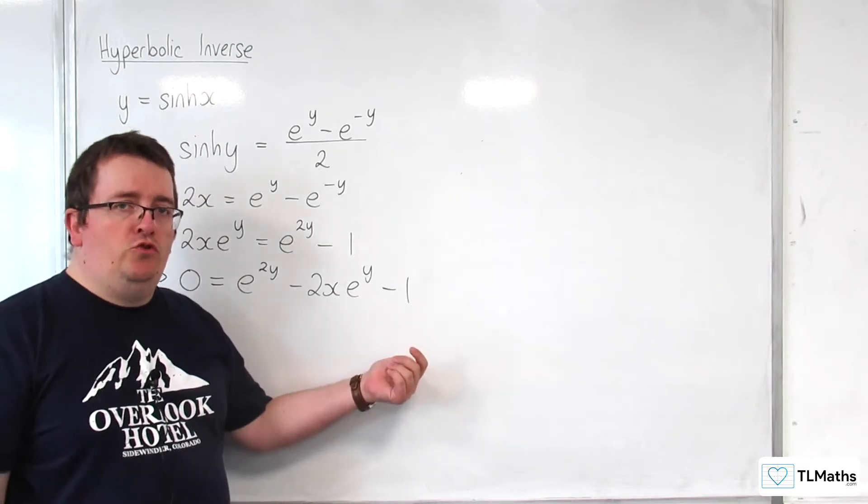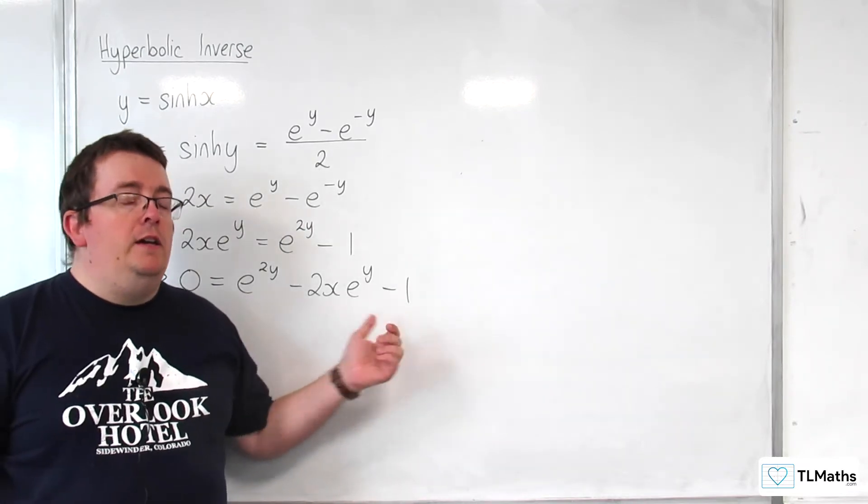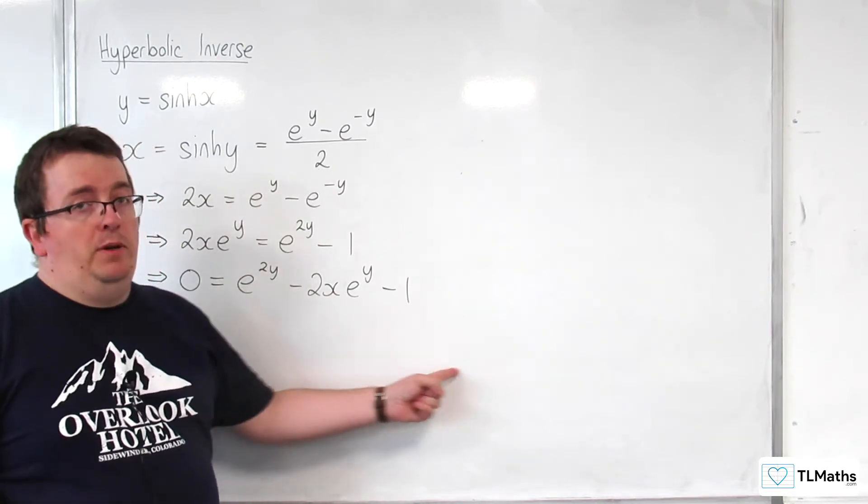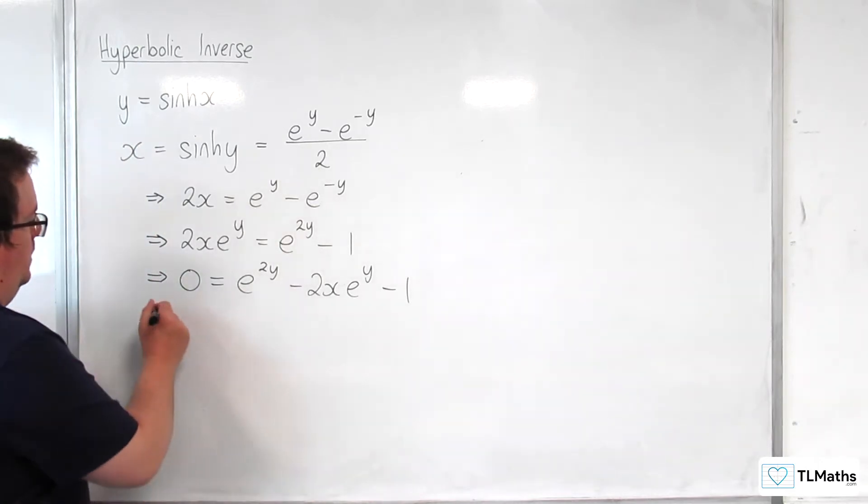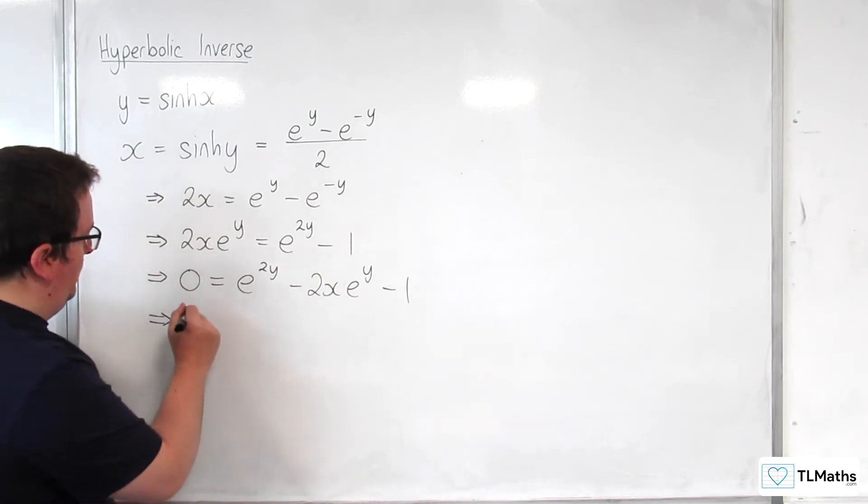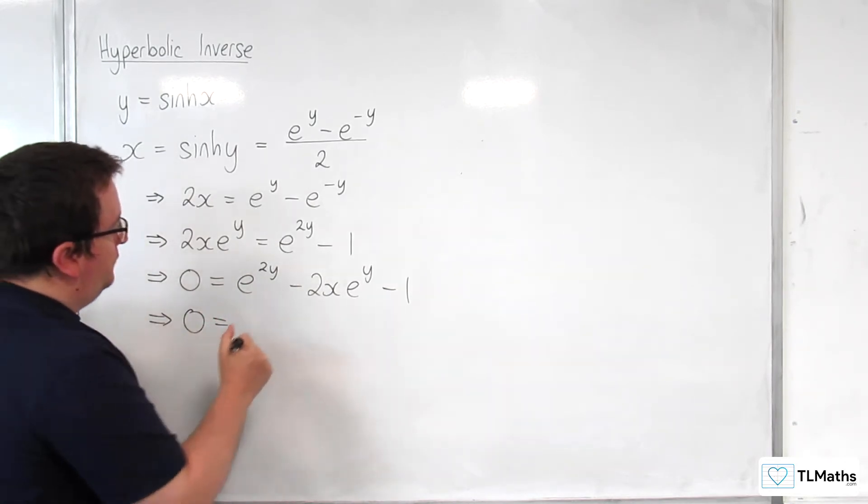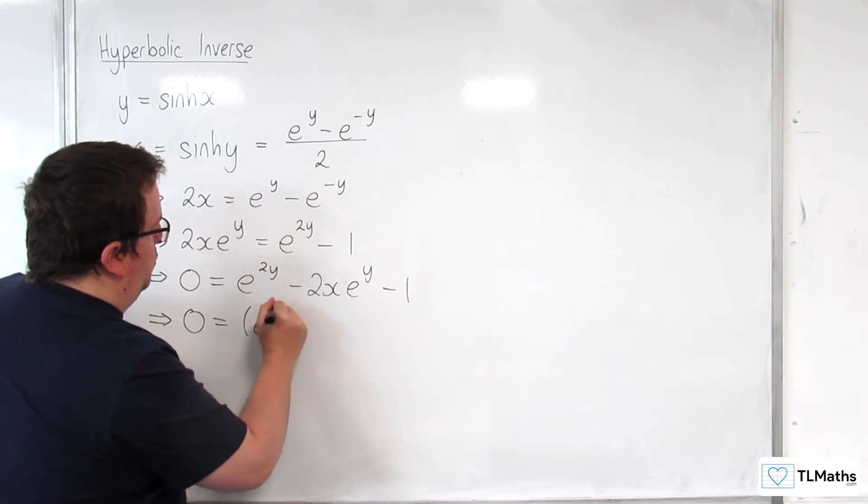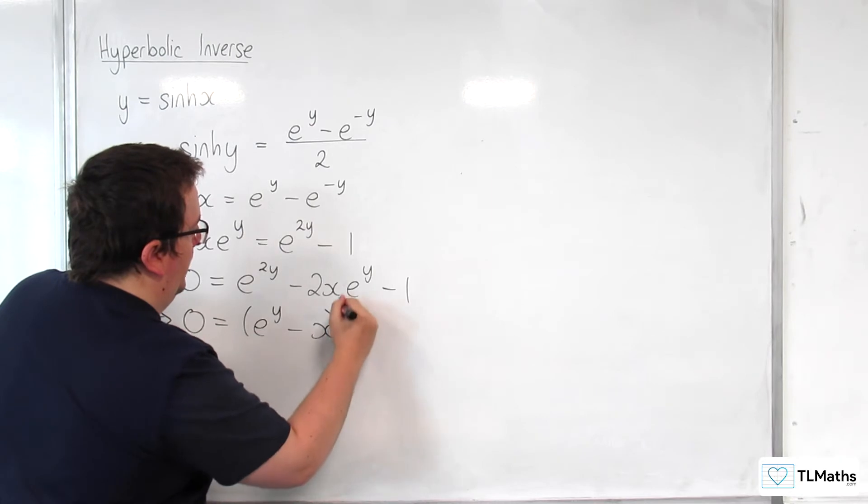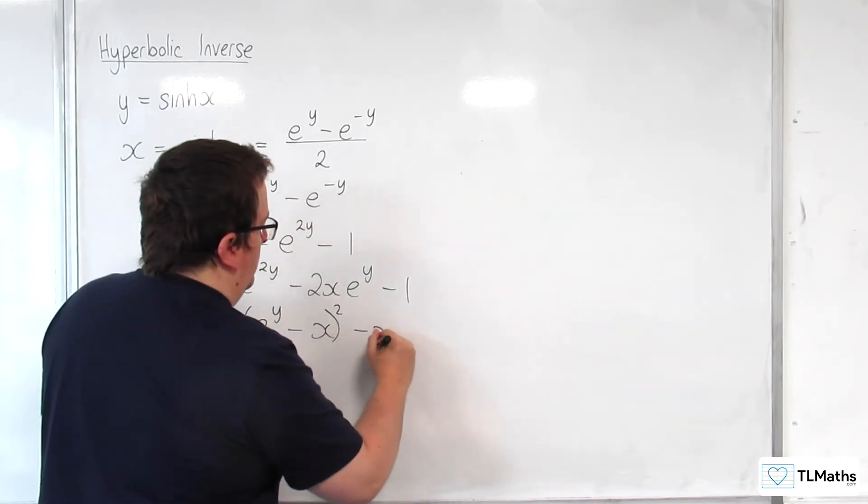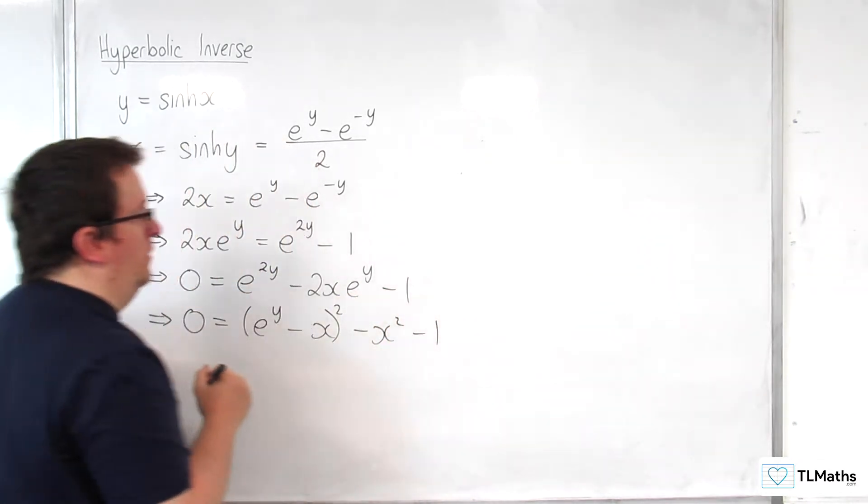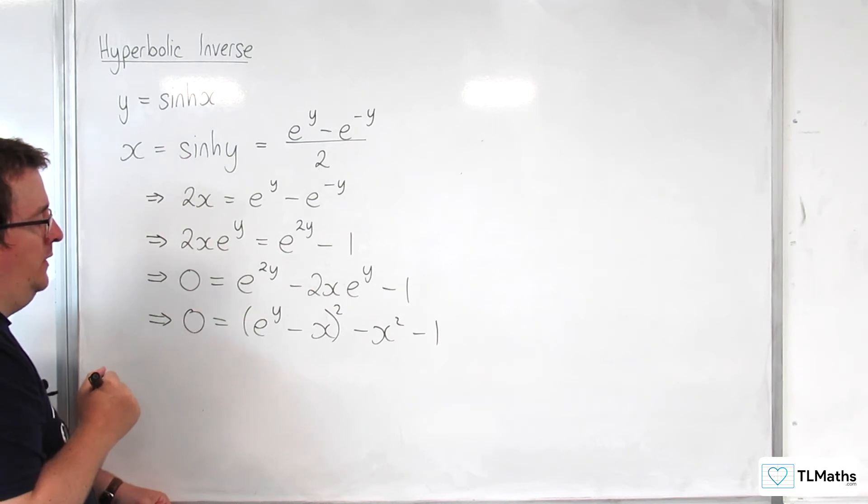Now here we have a hidden quadratic. Now to get y equals here, you could use the quadratic formula. I'm going to complete the square on this. Because essentially that's what you're doing with using the quadratic formula anyway. So 0 equals, and I would have e to the y take away half this coefficient, so take away x squared, take away the extra x squared that I get from that, and I've still got the take away 1 on the right-hand side.